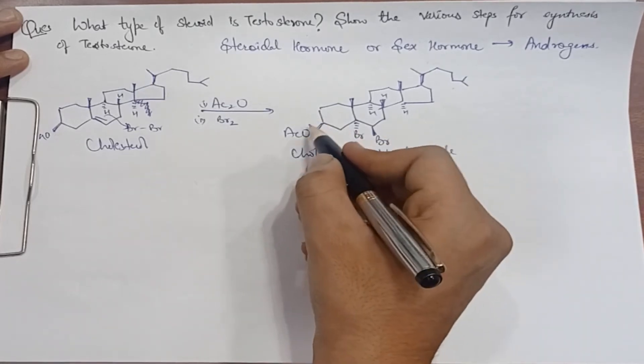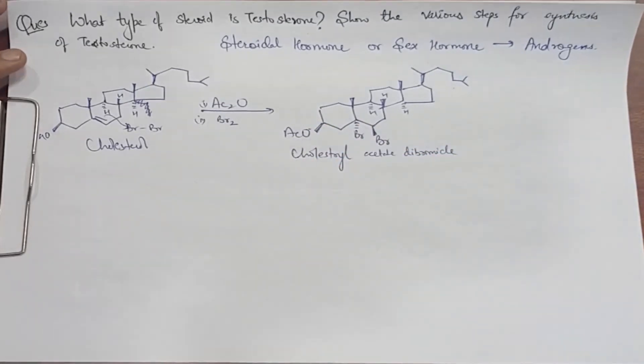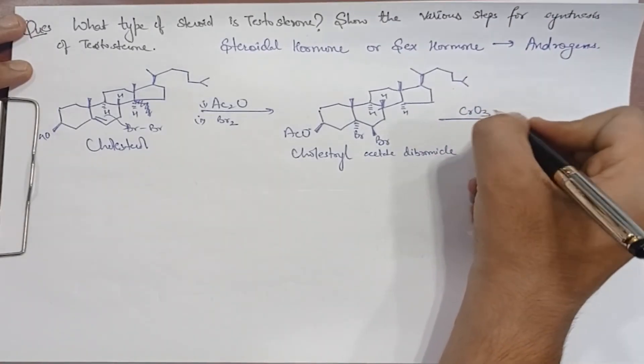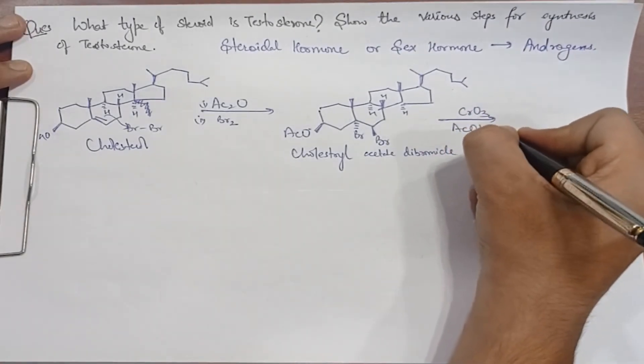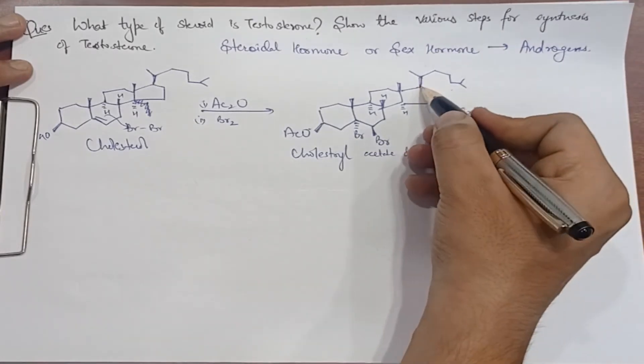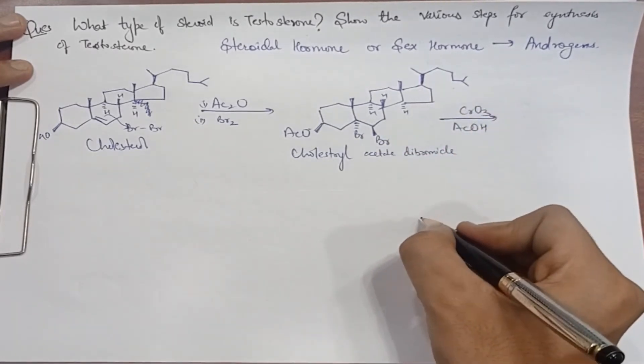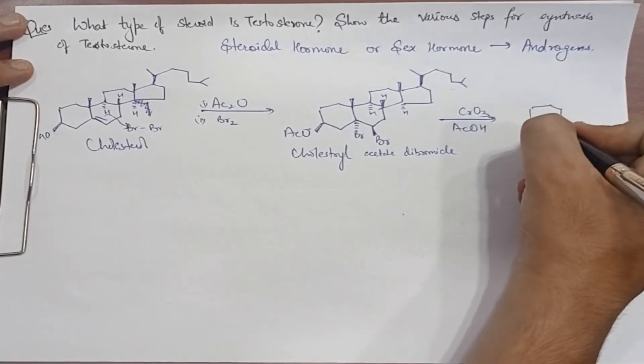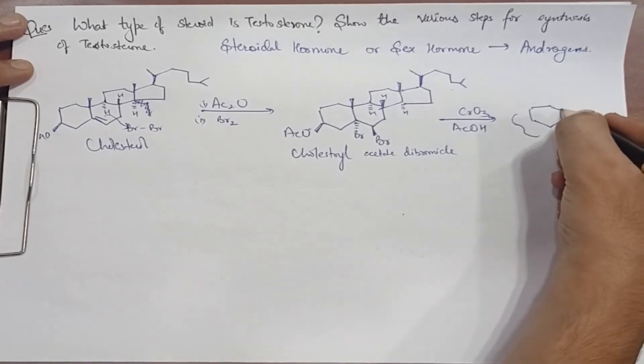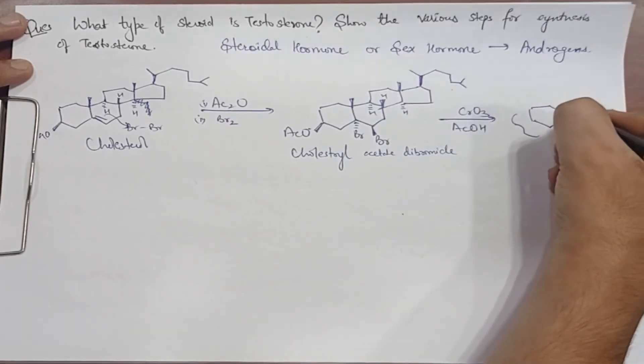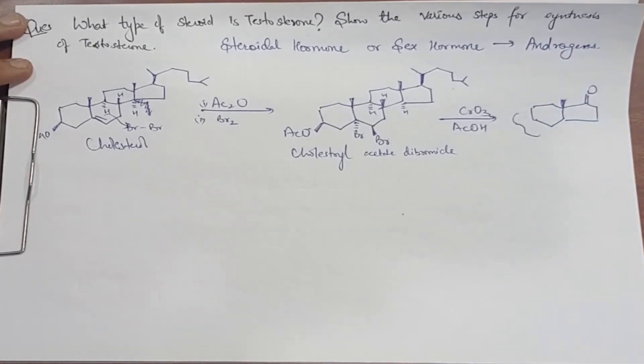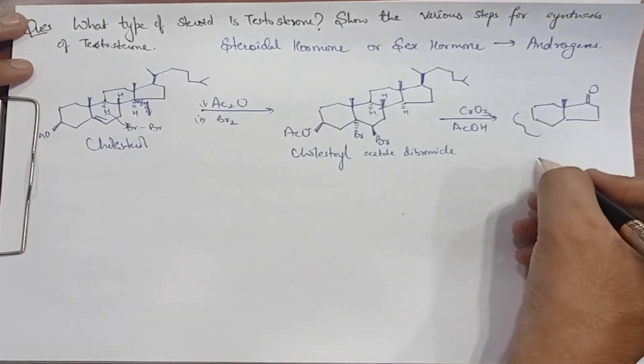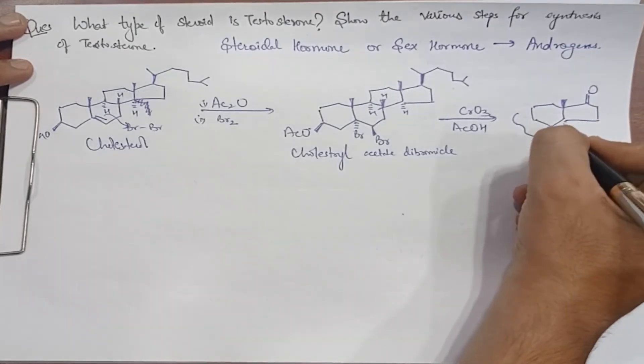Now we add chromium trioxide in acetic acid. What do we do? Oxidation. This hydrogen will be oxidized.